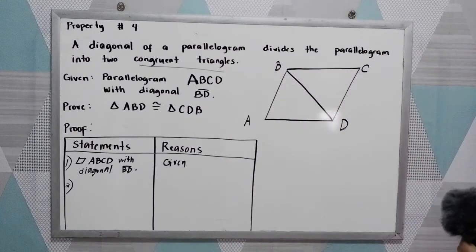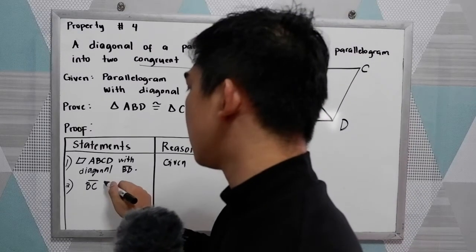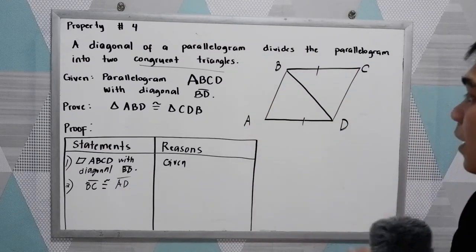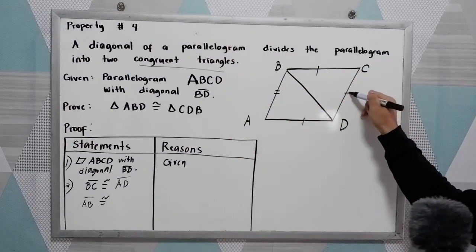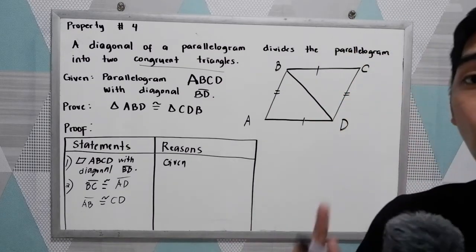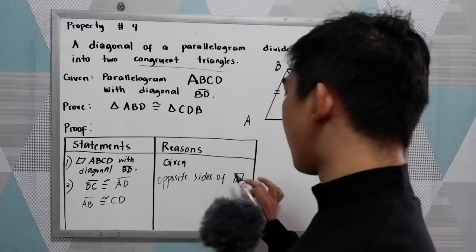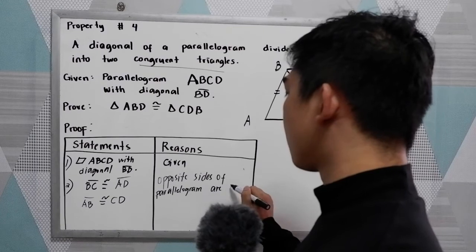Second, we can say that since the given is a parallelogram, we're going to use the sides — opposite sides are congruent. So, side BD is congruent to side AD, and side AB is congruent to side CD. That is our property number one: opposite sides of a parallelogram are congruent.